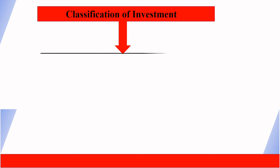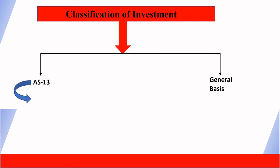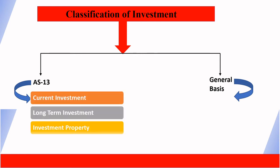Now we need to understand the classification of investments. Accounting Standard 13 bifurcates investments into three types: Number one is current investments, number two is non-current, which is called long-term investments, and number three is investment property. These are the three types under AS13 basis.